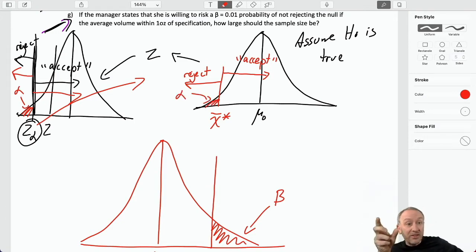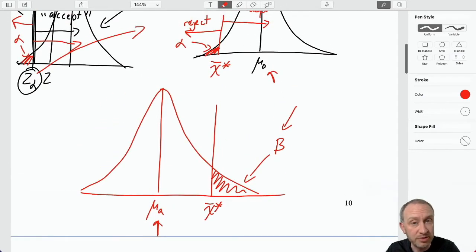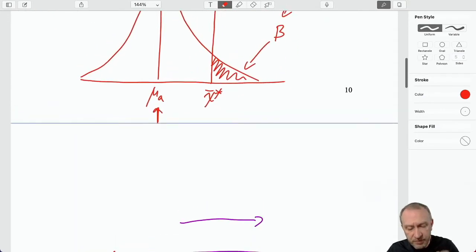So, I have alpha, my tolerance towards committing a type 1 error, I can see here, and here is where, in the previous video, where we calculated beta, probability of a type 2 error, which was reliant on that difference between mu a and mu 0. Now, those two values are exactly the same. x-bar star are exactly the same in both of those distributions. So, what does that mean?